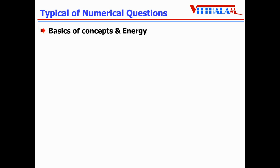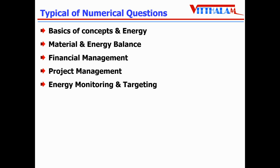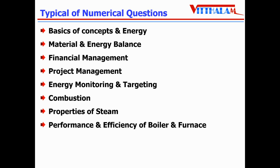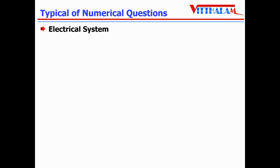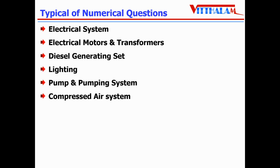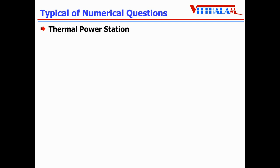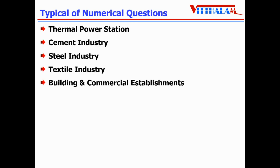Numerical questions typically come from: for paper 1 — basics of energy concepts, material energy balance, financial management, project management, and energy monitoring and targeting. For paper 2 — combustion, properties of steam, efficiency and performance measurements for boilers and furnaces, and insulation. For paper 3 — electrical systems, electric motors, transformers, DG sets, lighting, pumps and pumping system, compressor system, refrigeration and air conditioning, fans and blowers, cooling towers, co-generation and tri-generation, vapor absorption systems, and heat exchangers. For paper 4, anything can come from any area, and also from the 5 industries: thermal power station, cement, steel, textile, and building.